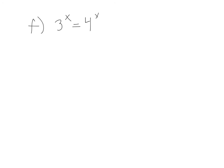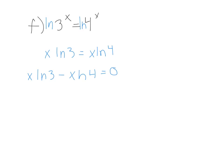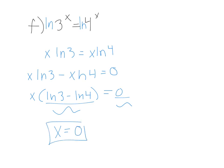For problem F: many people can see the answer just by looking at it. Taking the natural log of both sides gives x·ln(3) equals x·ln(4). Subtract to get x·ln(3) minus x·ln(4) equals 0. Factoring out x: x times (ln(3) minus ln(4)) equals 0. Zero divided by anything is 0, so x equals 0 is the only solution — it's the only value that makes the original equation work.